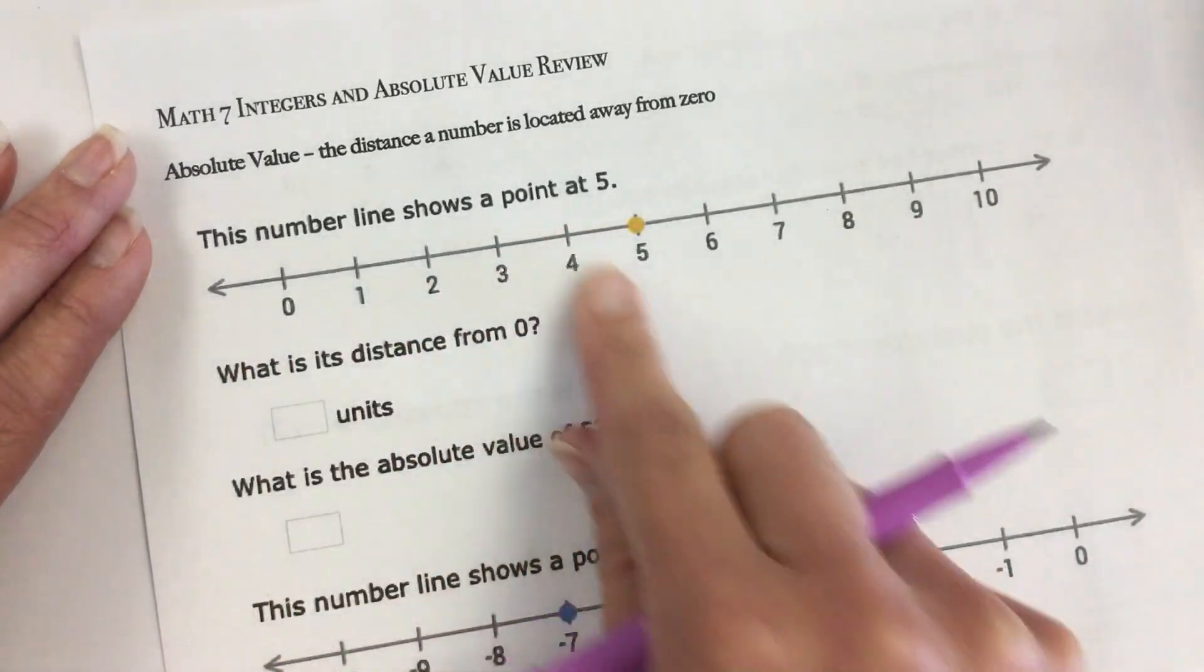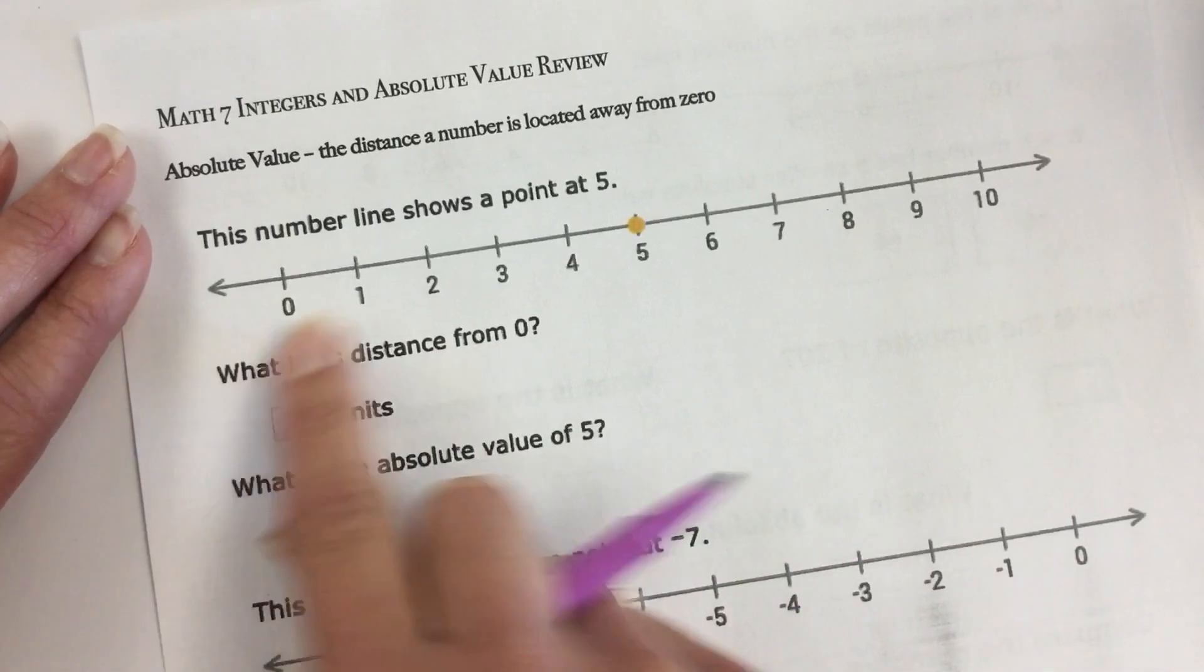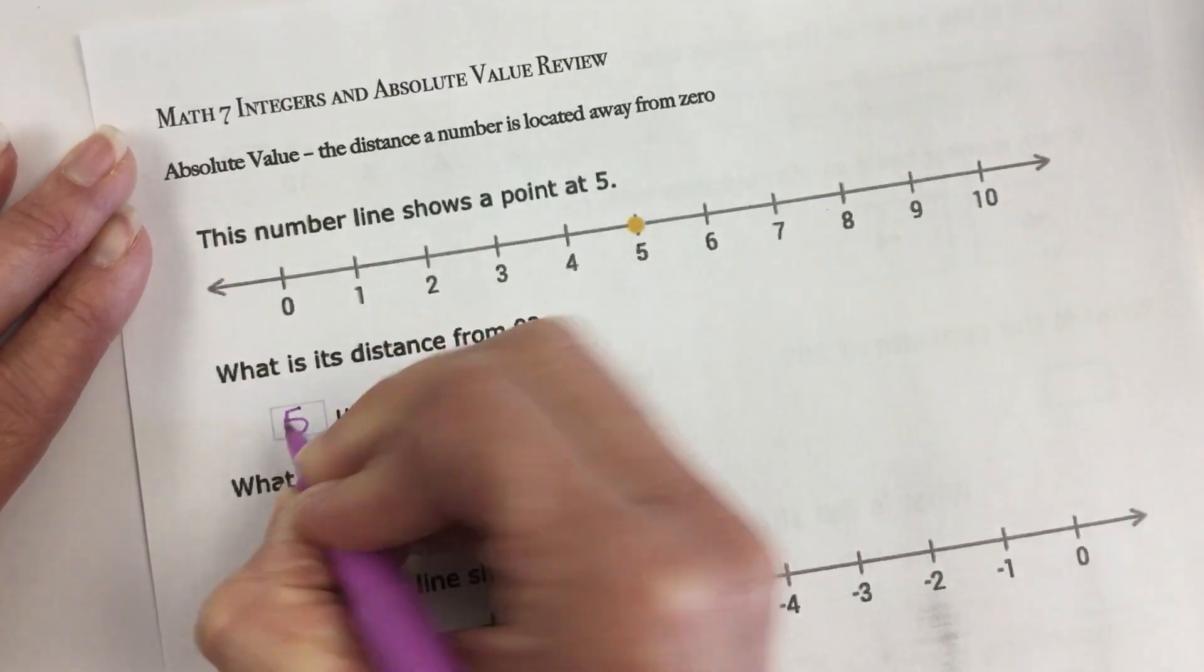It says this number line shows a point at 5. What is its distance from zero? Well if zero is here and five is here, it is one, two, three, four, five units away from zero.